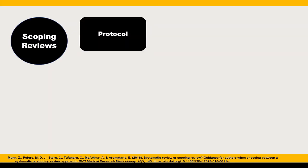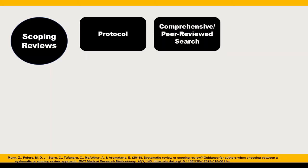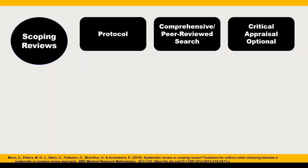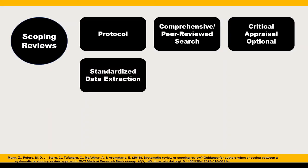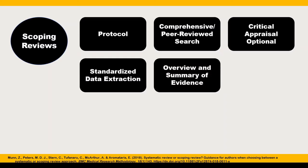A scoping review should have a protocol, but it does not need to be registered. While Prospero does not accept scoping review protocols, OSF and Figshare may provide reasonable alternatives. A scoping review should also have a documented, comprehensive literature search, but risk of bias assessment is optional. Scoping reviews will make use of standardized data extraction tools to provide a summary of key concepts and an overview or map of the evidence.